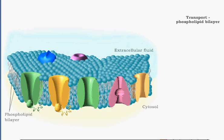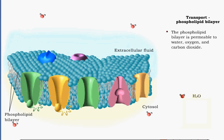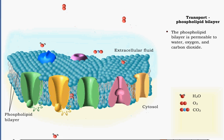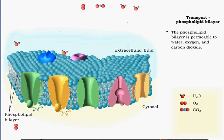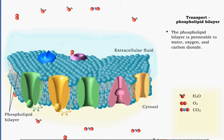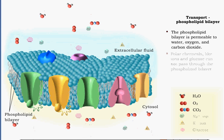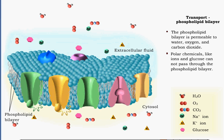Water and gases like oxygen and carbon dioxide can easily pass through the phospholipid bilayer — in other words, the membrane is permeable to these molecules. Charged or polar chemicals, such as ions and glucose, cannot pass through the bilayer.